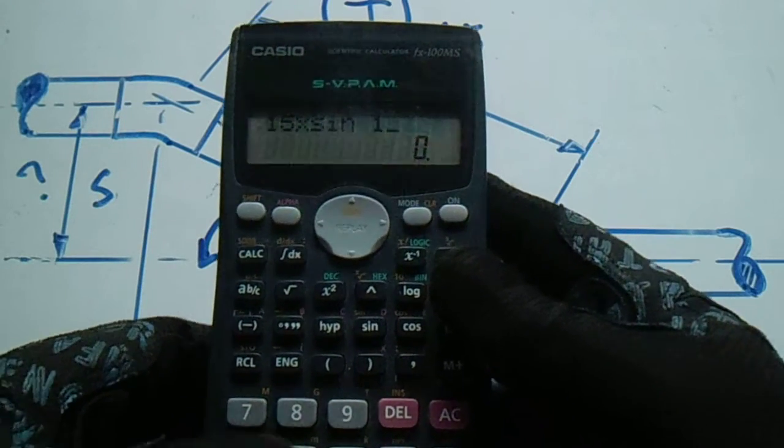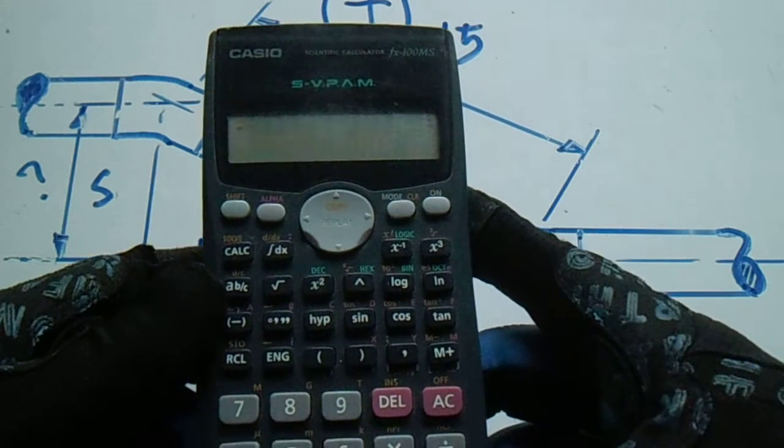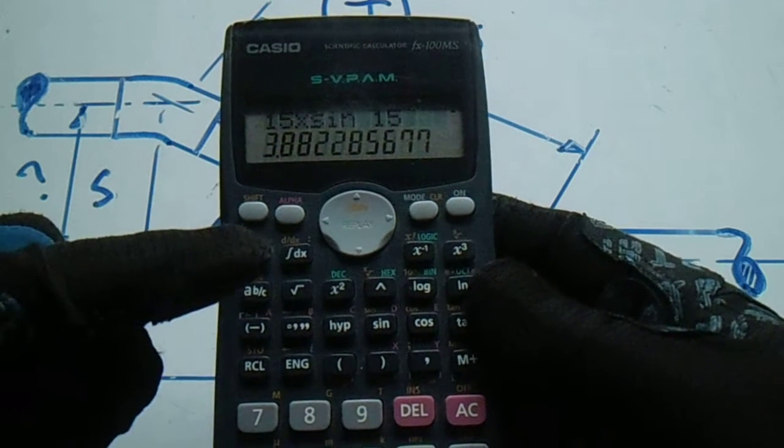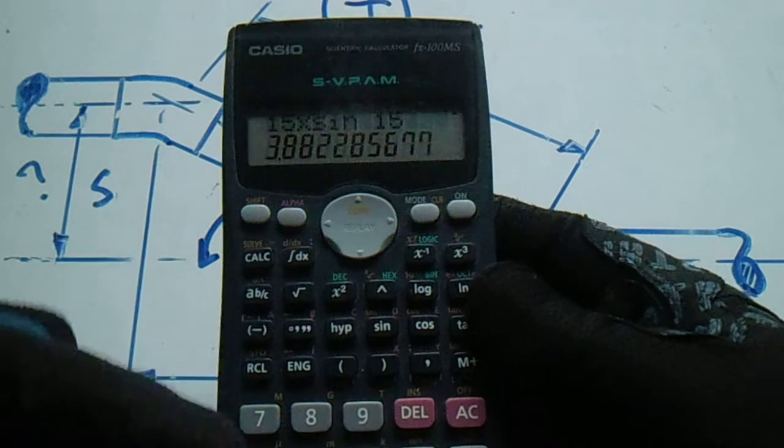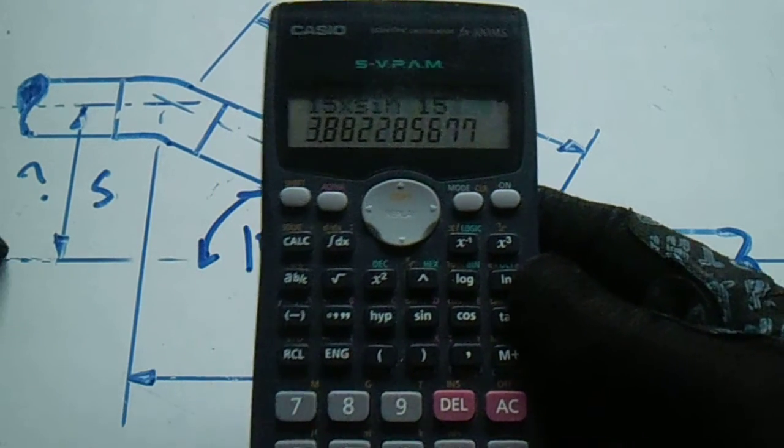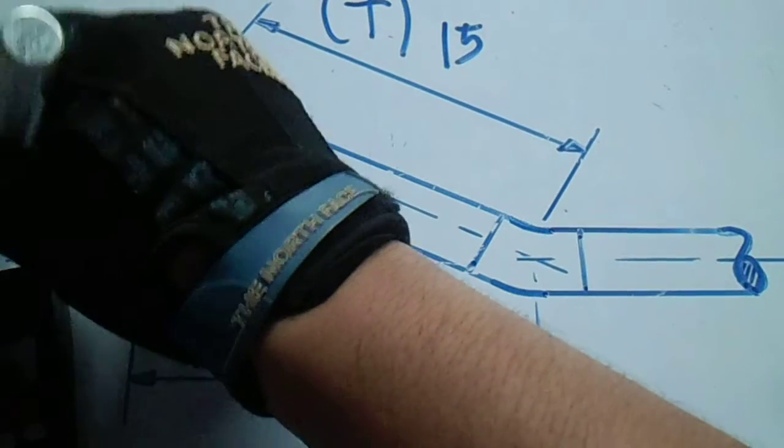Sine 15 degrees, so the answer is, so this is our set. So 3.88, we will round it, this is 3.9. We have a 3.9 in set. So this is 3.9.